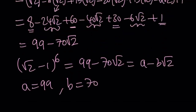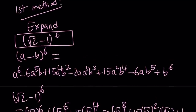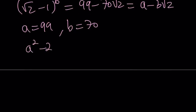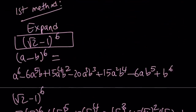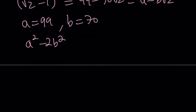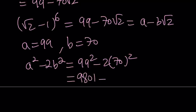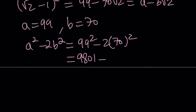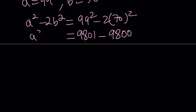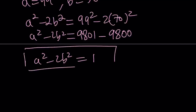The question was asking for a squared minus 2b squared — 2B or not 2B, right? And our expression was given as a minus b root 2. So how do you evaluate this? You just plug it in: it's going to be 99 squared minus 2 times 70 squared. 99 squared is 9,801. 70 squared is 4,900; multiply that by 2 and you get 9,800. If you subtract those two values, you get 1. Hmm, that's kind of interesting!